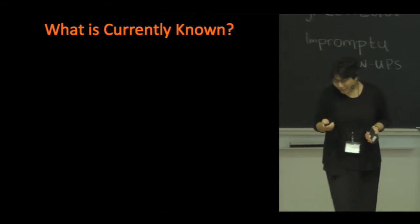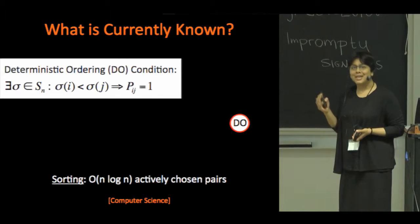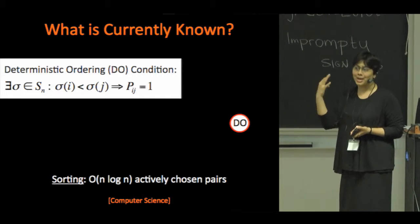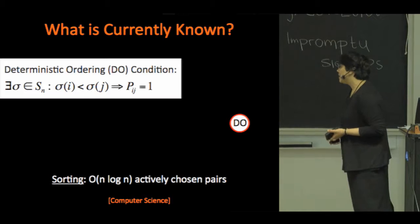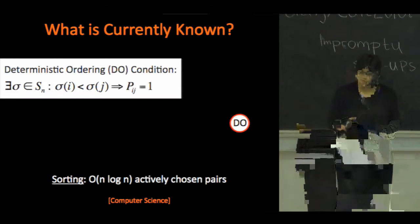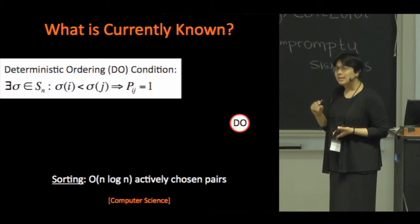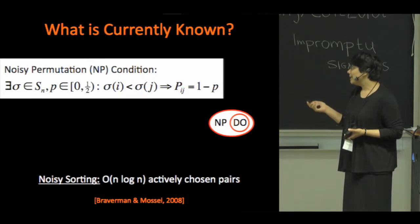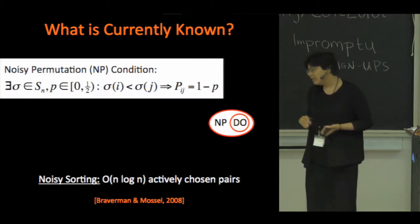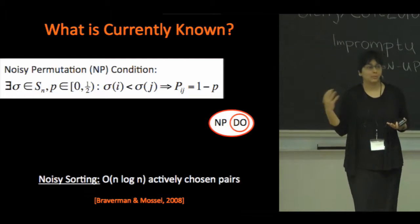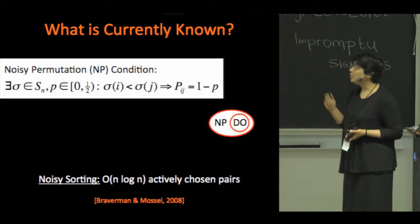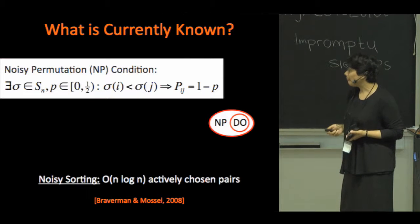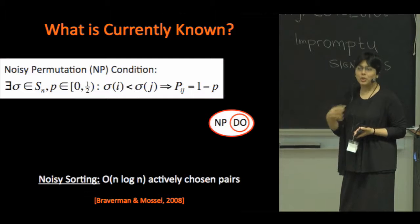So what's currently known? First of all, if these pairwise comparisons follow a deterministic ordering — so there's a permutation such that p_ij is 1 whenever i is ranked ahead of j — then it's a standard result in computer science that comparisons of N log N pairs is sufficient to recover this ranking, but these pairs need to be chosen actively or adaptively. In 2008, Braverman and Mosel showed that this actually holds for a somewhat broader condition: the noisy permutation condition, where there's noise associated with observing these outcomes. Again, one can compare N log N pairs, but they need to be chosen adaptively.